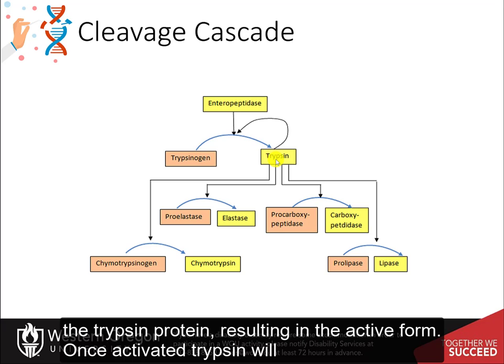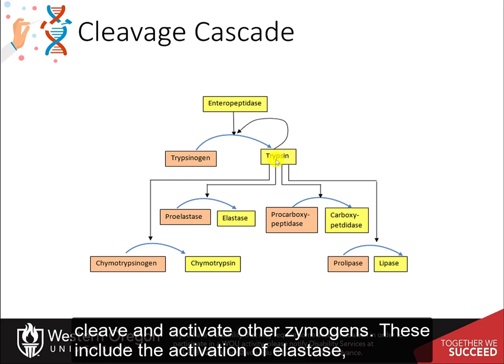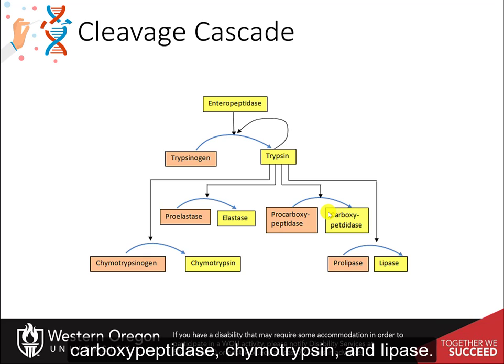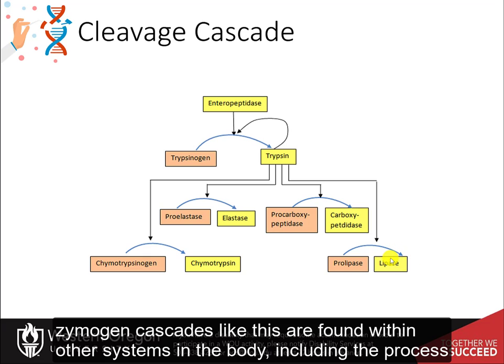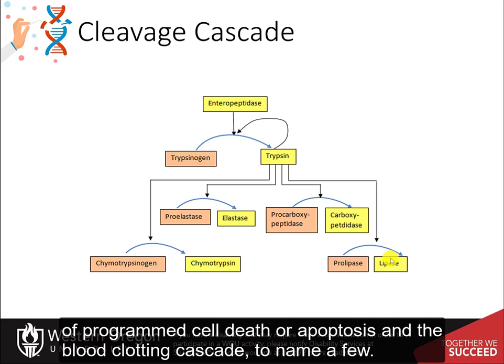Once activated, trypsin will cleave and activate other zymogens, including elastase, carboxypeptidase, chymotrypsin, and lipase. Zymogen cascades like this are found within other systems in the body, including the process of programmed cell death, or apoptosis, and the blood clotting cascade, to name a few.